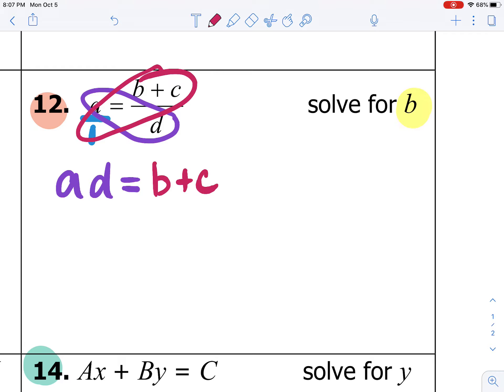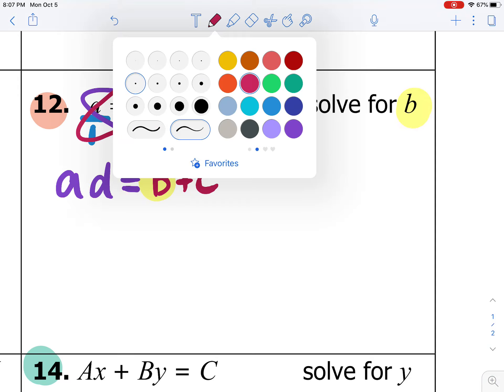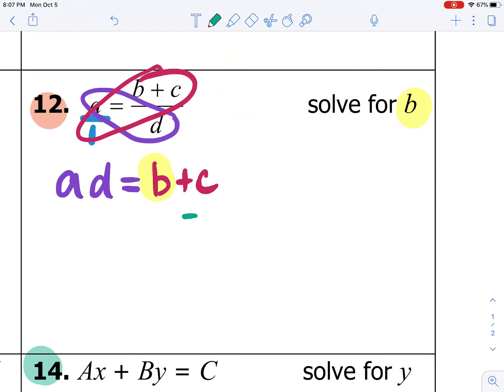Then from here, now that all the fractions are gone, I'm going to look for b again. b is right here. So in order to solve for b, the last thing that we need to do is subtract c from both sides. So by doing that, we cancel c over on the right, and on the left, we have ad minus c, and that's going to equal b. You can also write it as b equals ad minus c.